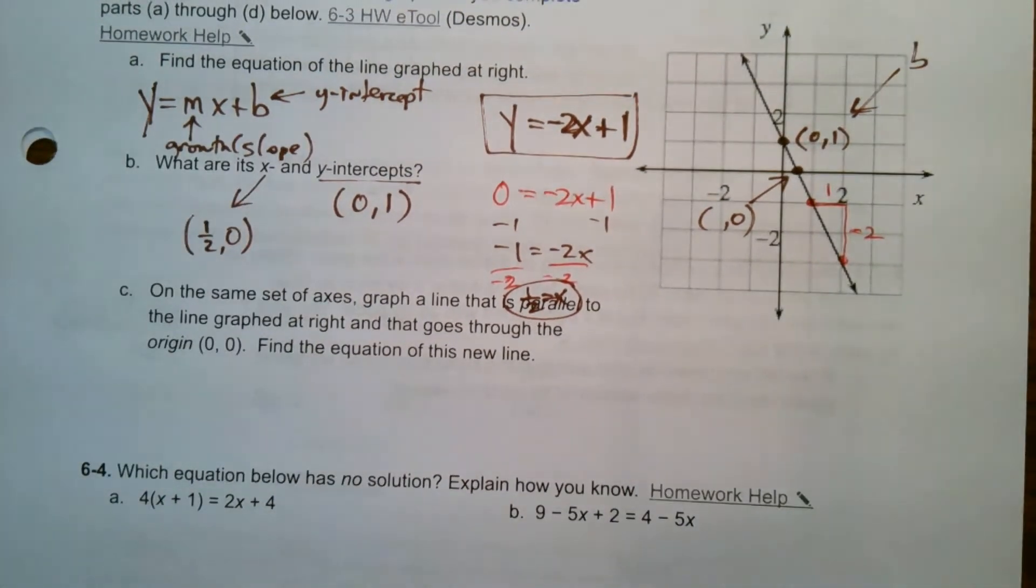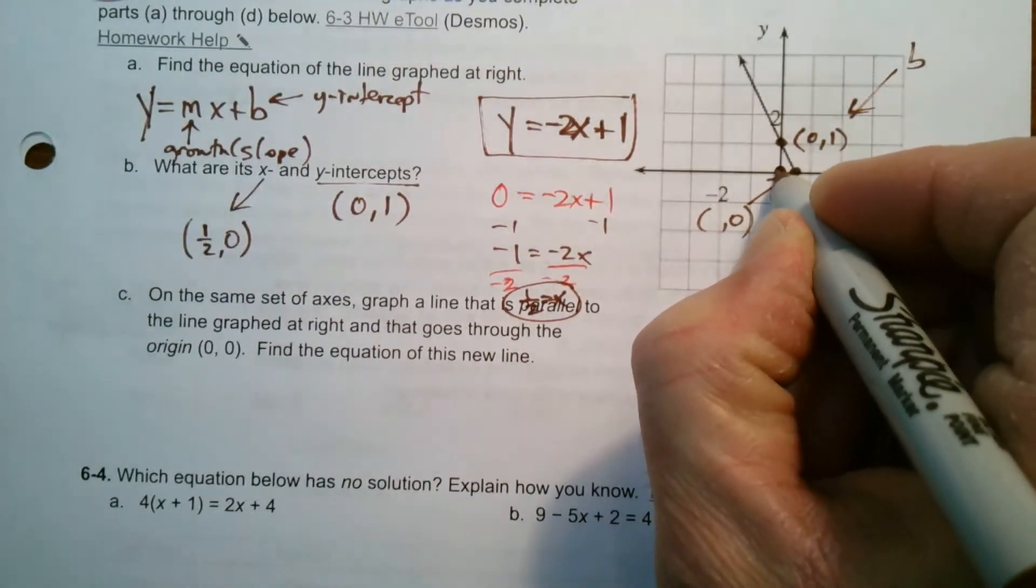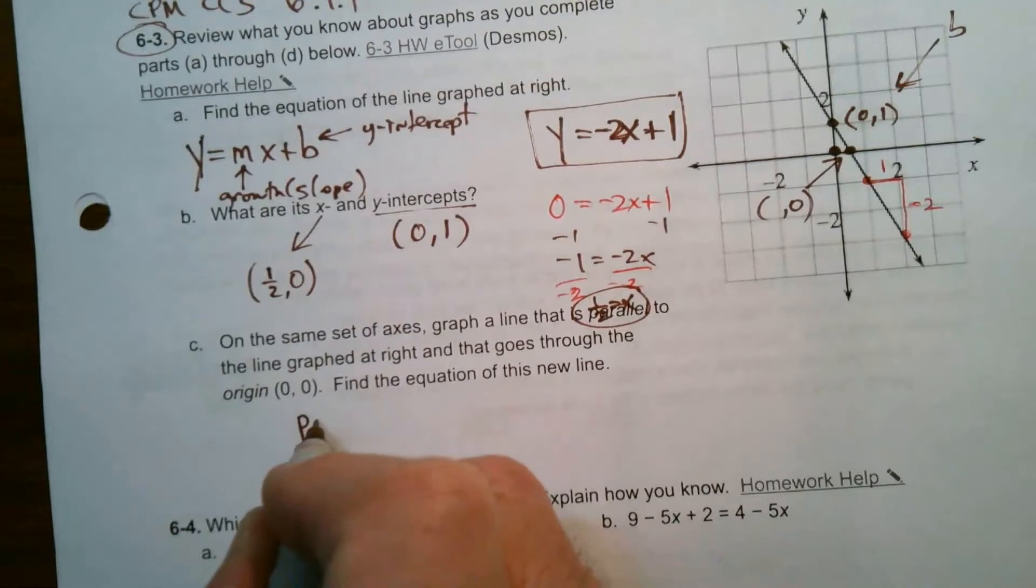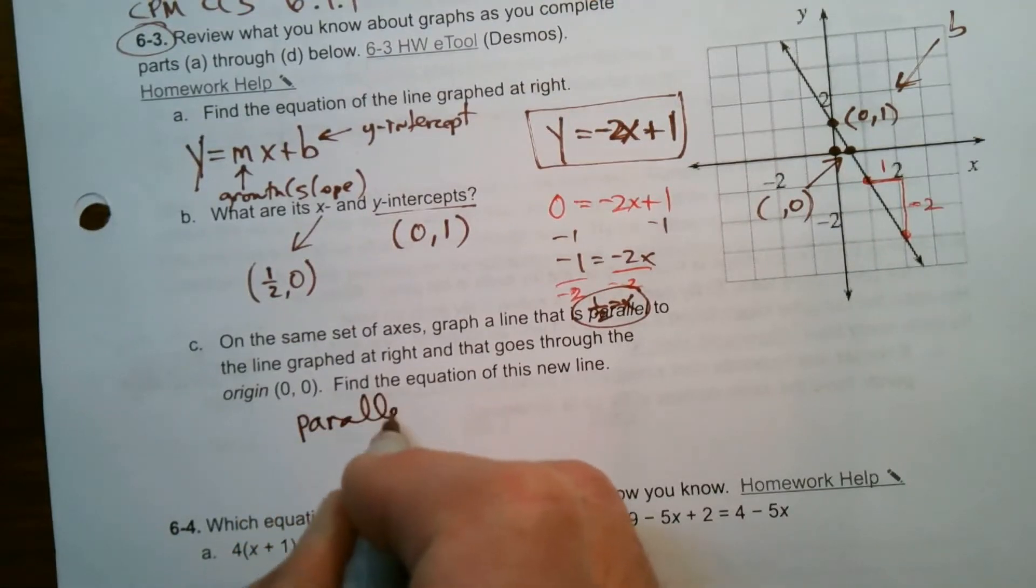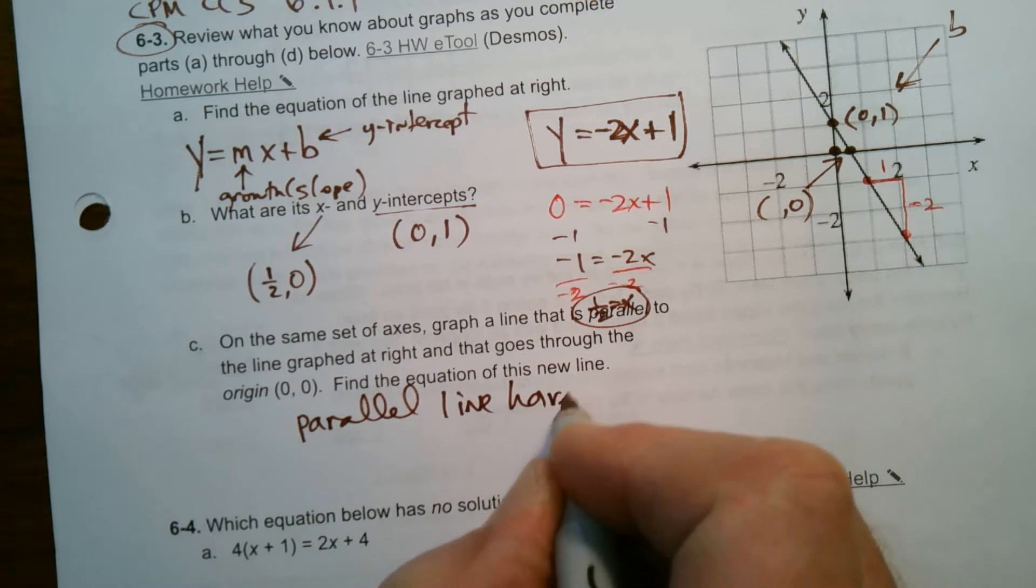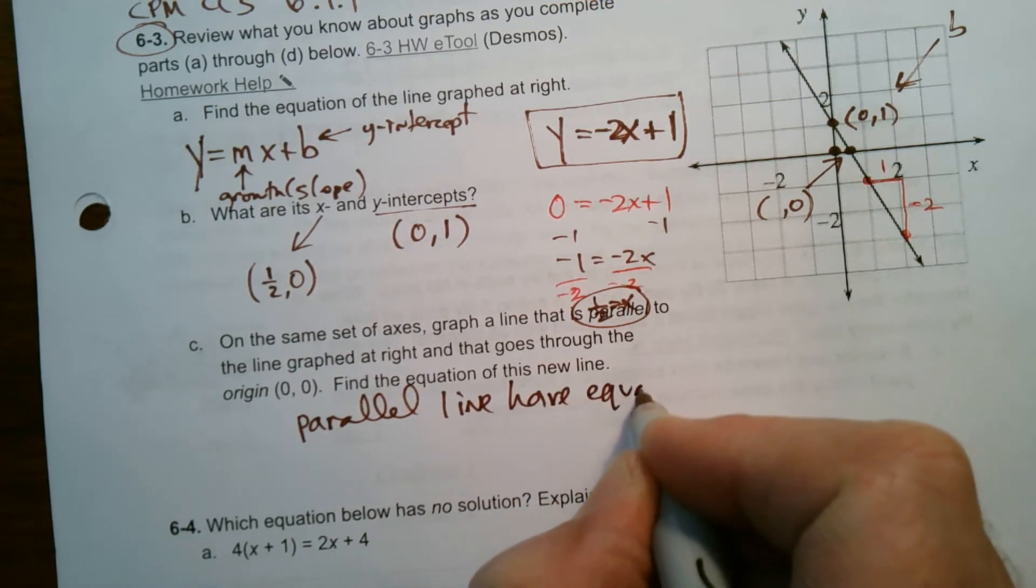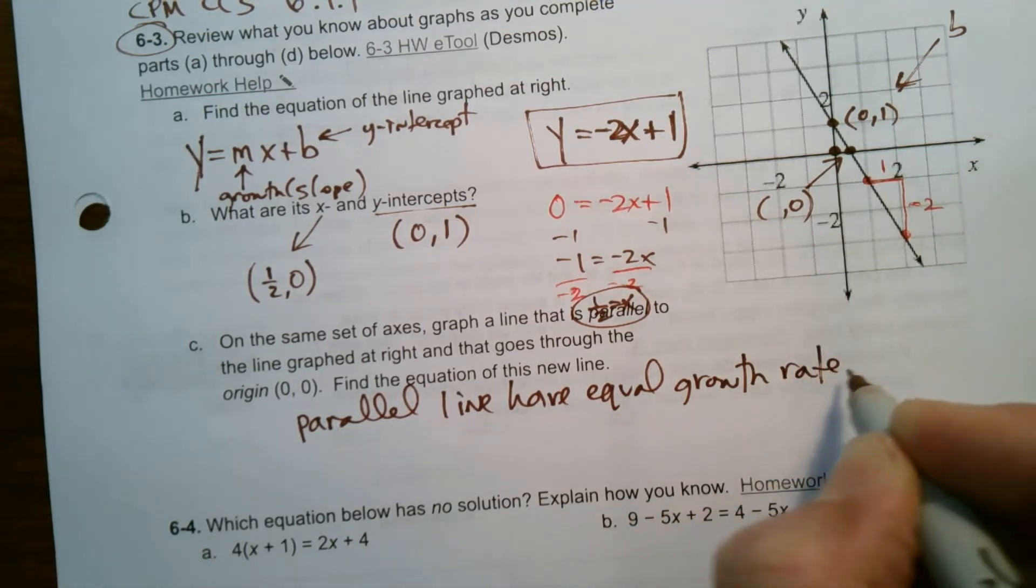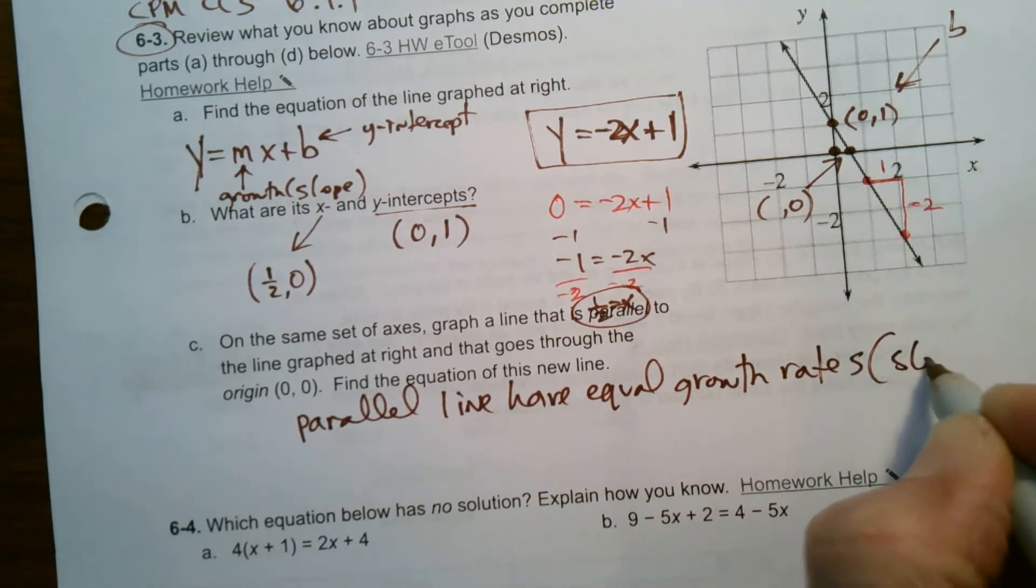So I need to go through 0, 0 right there. And it's got to be parallel. So what do we know? Parallel lines have equal growth rates, right? Equal growth rates or slopes, if you want to call it that.